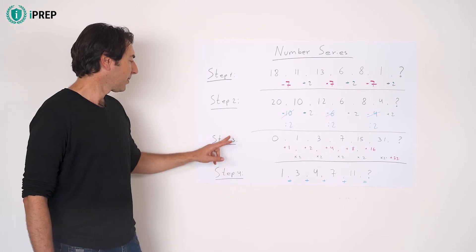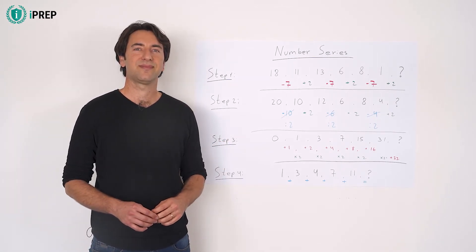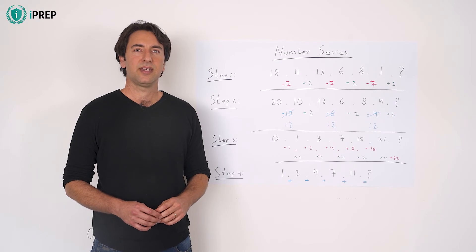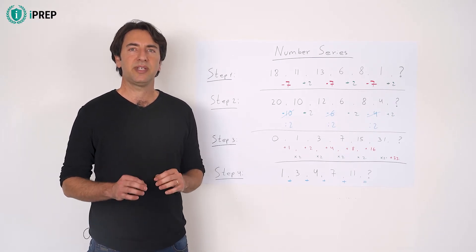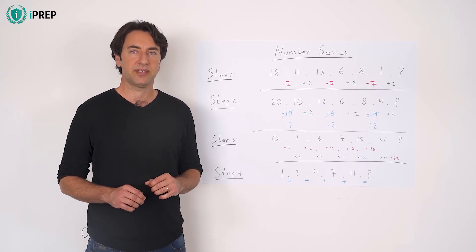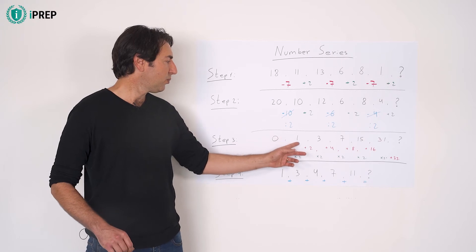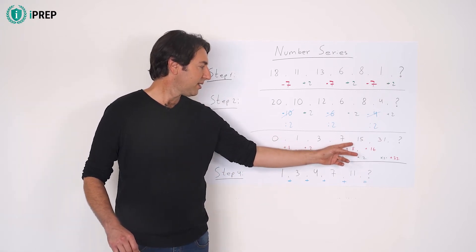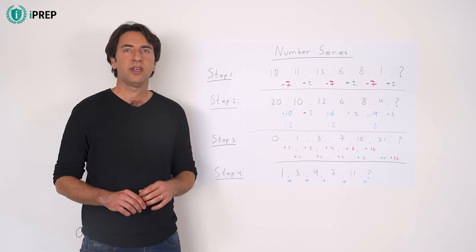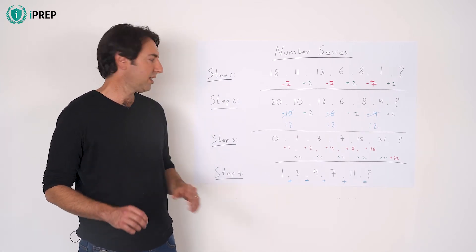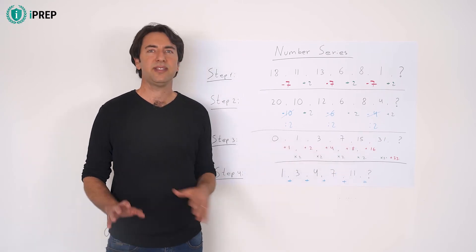Step 3. Try to see if there is a logical pattern to the second order series of differences. For example, in this series: 0, 1, 3, 7, 15, 31. The first order of differences is plus 1, plus 2, plus 4, plus 8, plus 16.